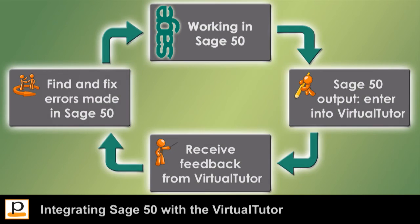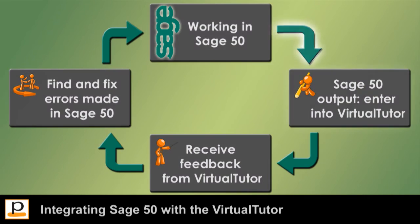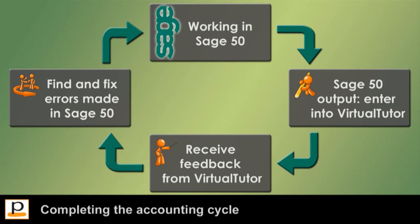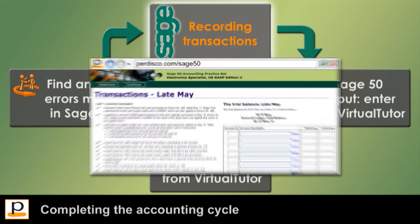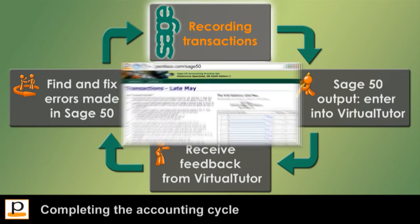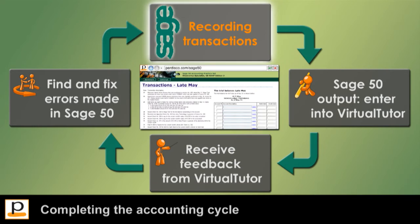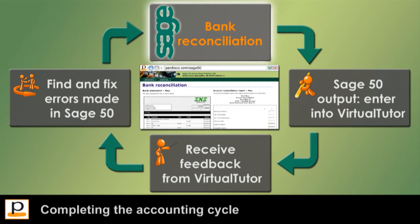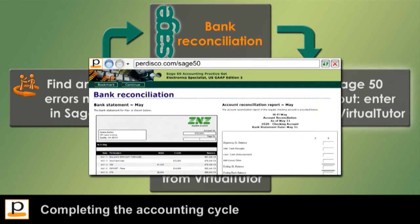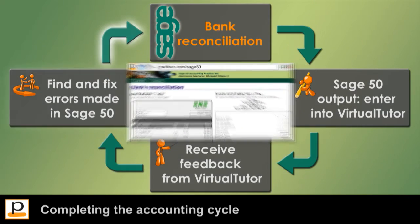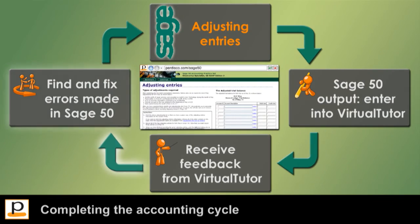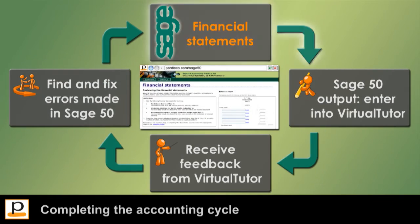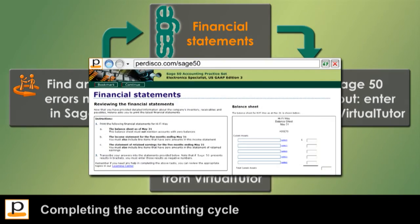Students then apply this process to each of the remaining parts of the practice set to complete the accounting cycle by recording further transactions for May and generating different trial balance reports, performing a bank reconciliation, recording adjusting entries and generating an adjusted trial balance, and generating financial statements.